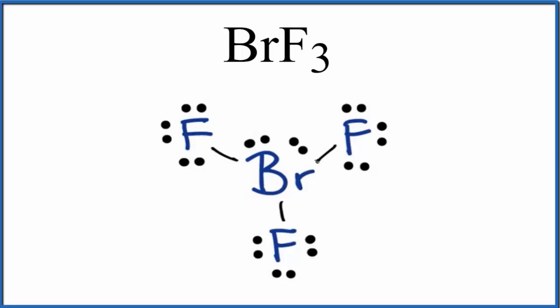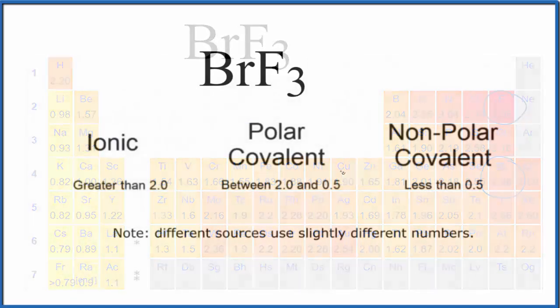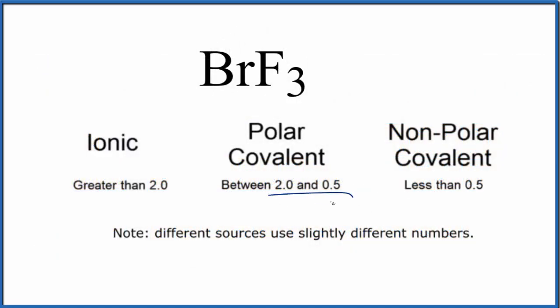Let's take a look at the difference in electronegativity between bromine and fluorine. Here's bromine and here's fluorine. The difference is about one. When we have a difference between 2.0 and 0.5, we're going to have a polar covalent bond.